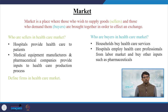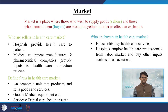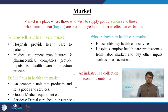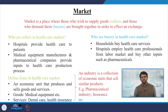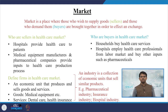A firm is an economic unit that produces and sells goods and services. In this context, goods are medical equipment, while services are like dental care or health insurance services. All these form together an industry. Hence an industry is a collection of economic units that sell similar products — for example, the pharmaceutical industry, the insurance industry, or the hospital industry as a whole.